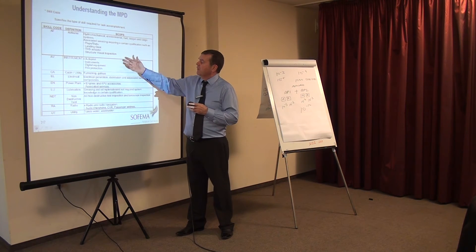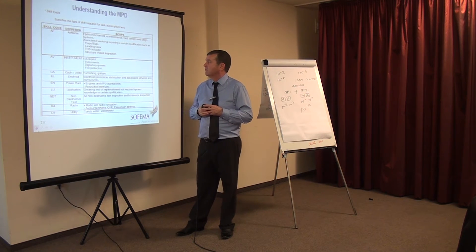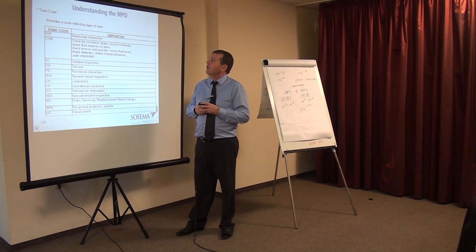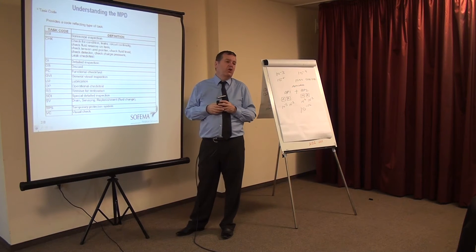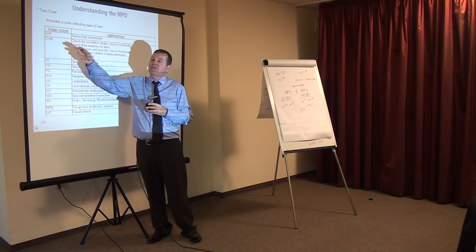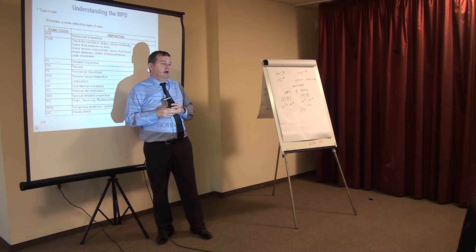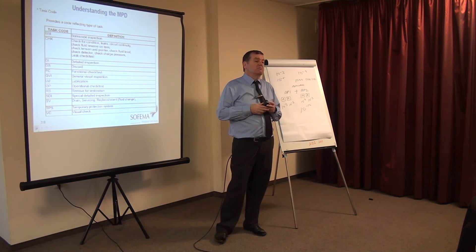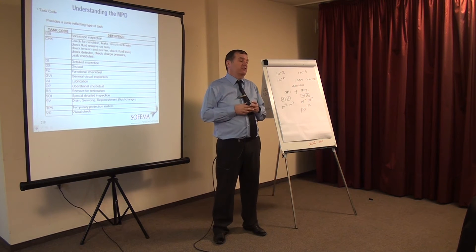Here we're talking about the scope of the various activities. Here we're talking about different task codes. Let's understand what we've got here. BSI is a boroscope inspection. Sometimes we do a boroscope inspection in the engines. We can also do boroscope inspections in other areas of the aircraft.